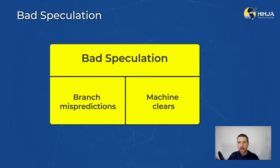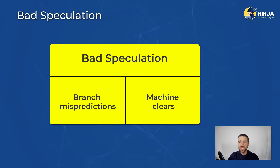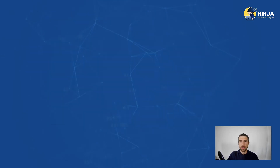In the top-down methodology, bad speculation is further broken down into two subcategories: branch mispredictions and machine clears. Let's take a closer look at both, starting from the most popular, which is of course branch mispredictions.